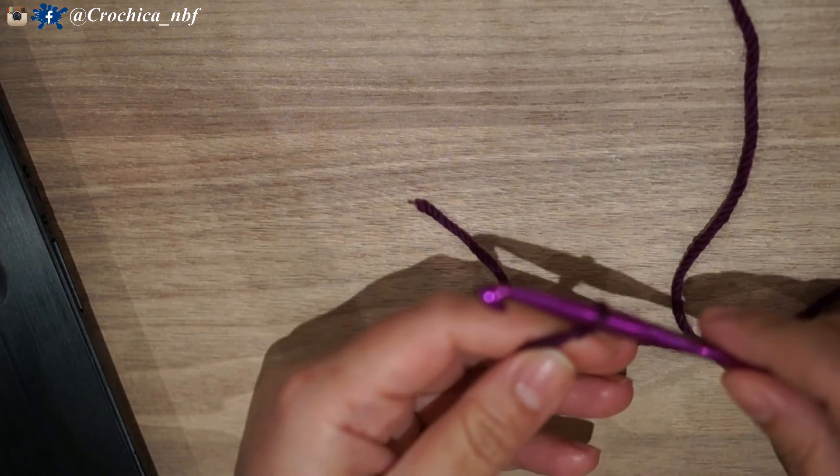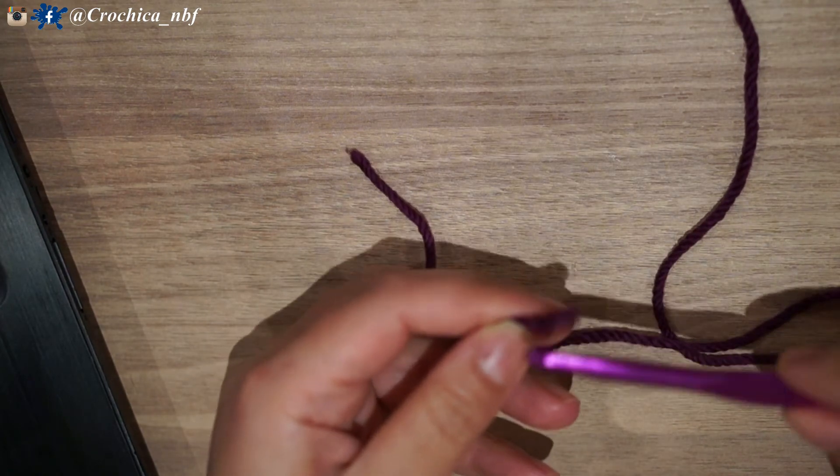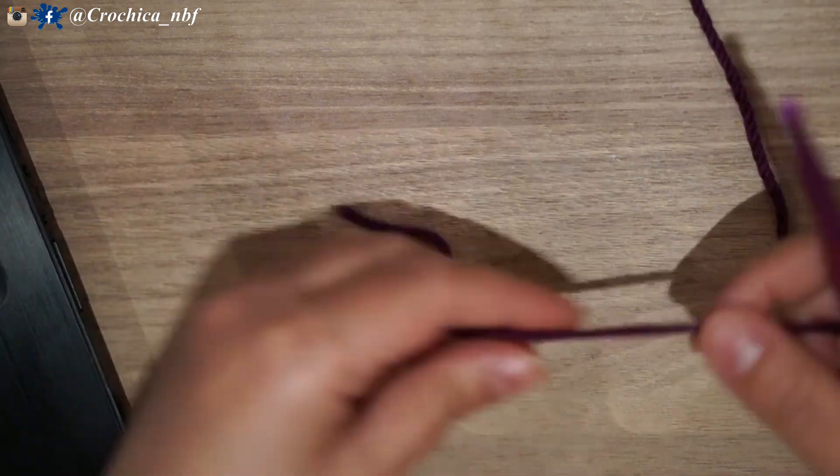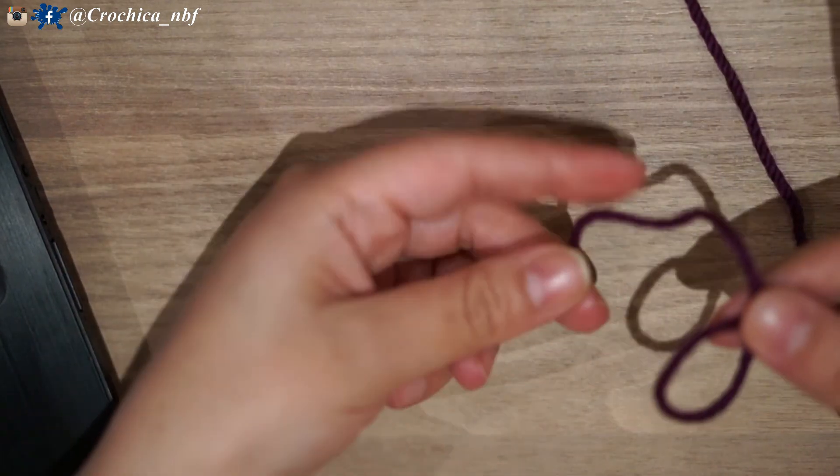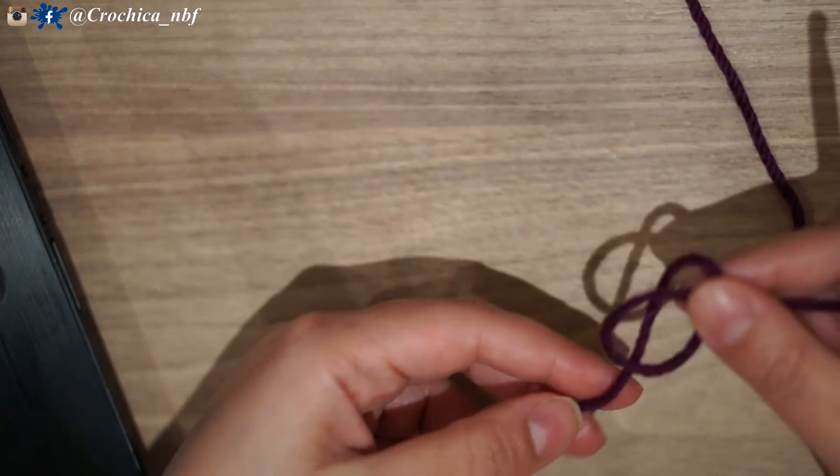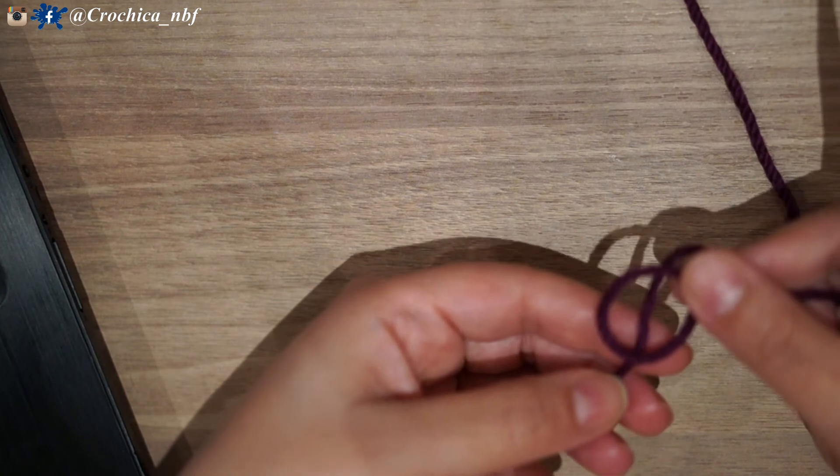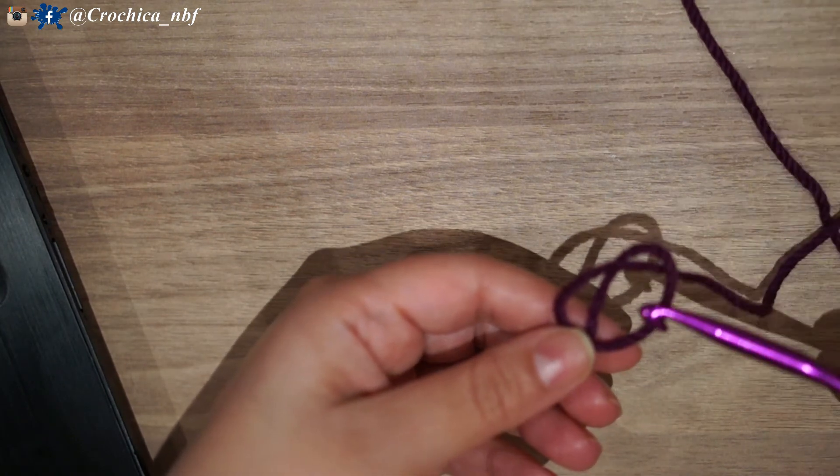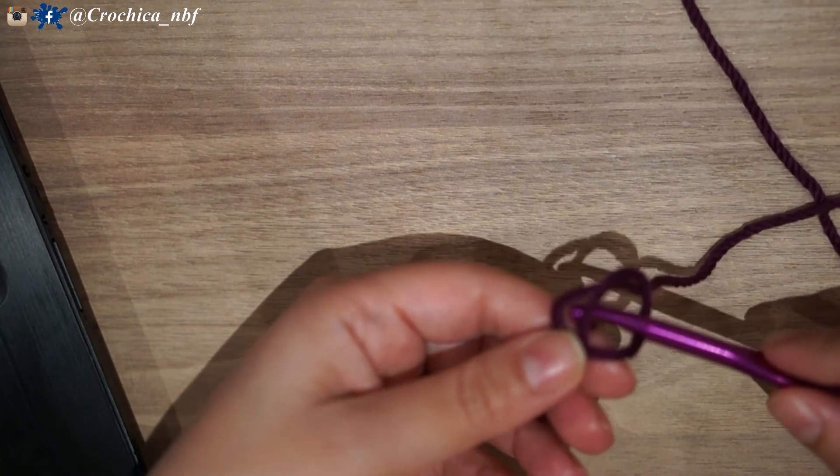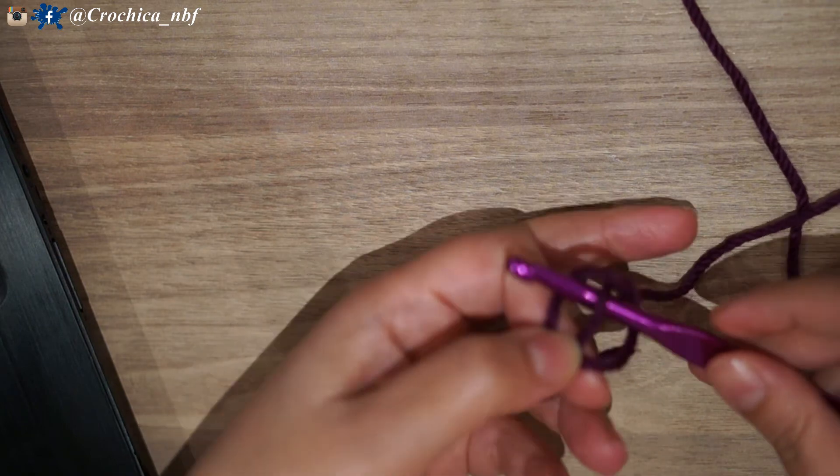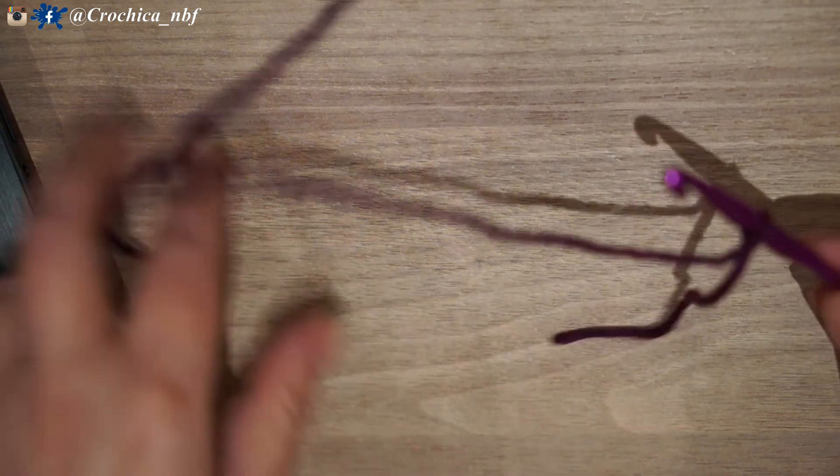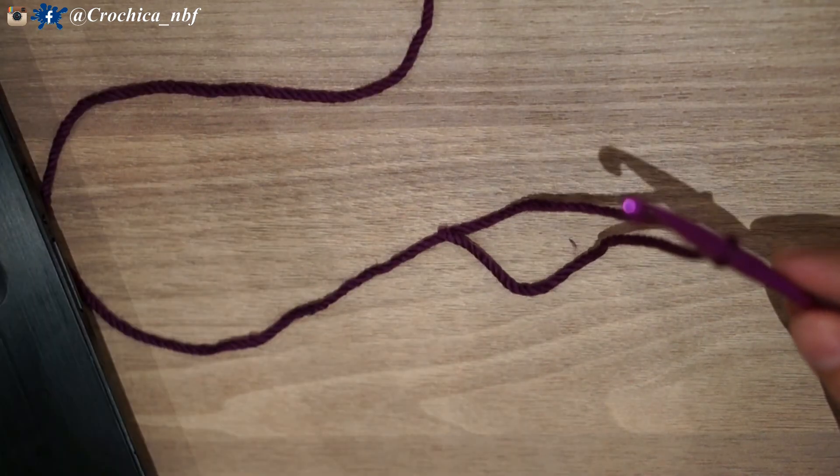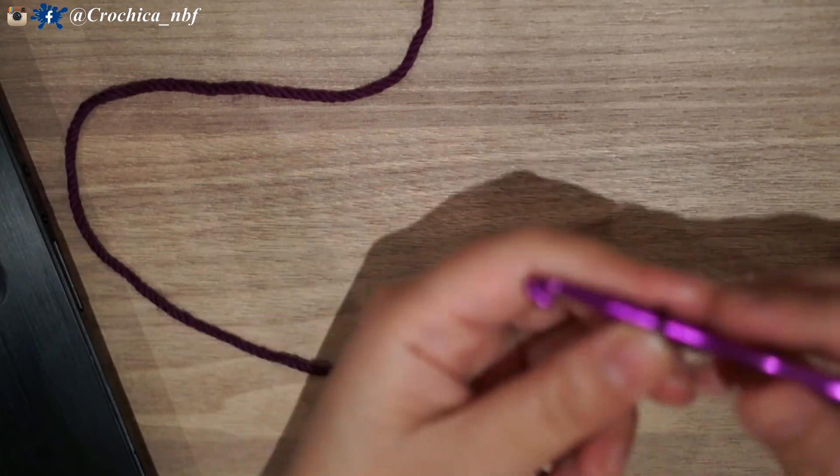I'll repeat again. We make a circle and we bring the short end under the circle like so. Then we put our hook under and we tighten to form our slip knot or magic loop.